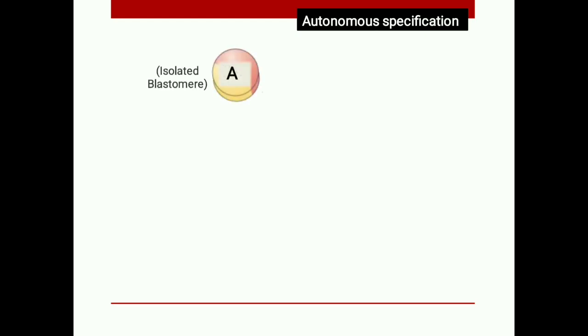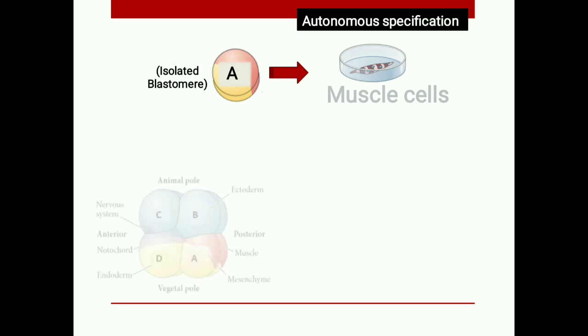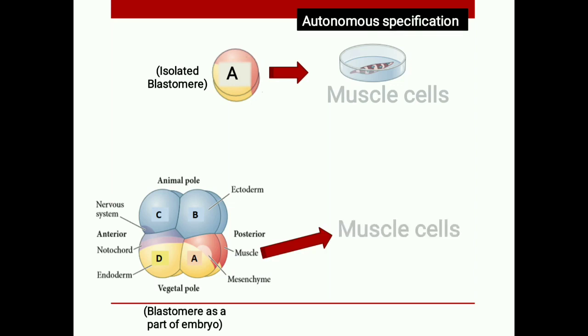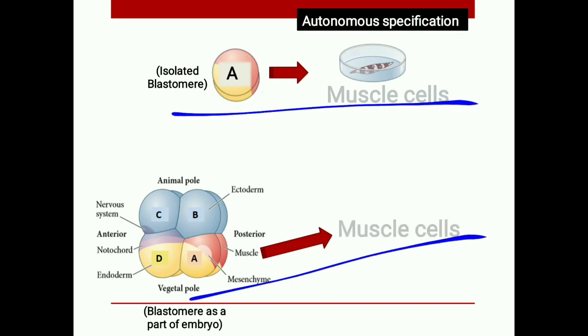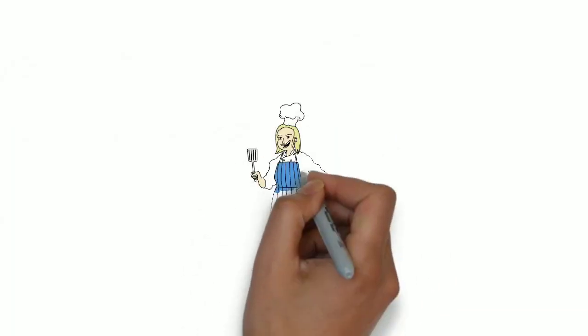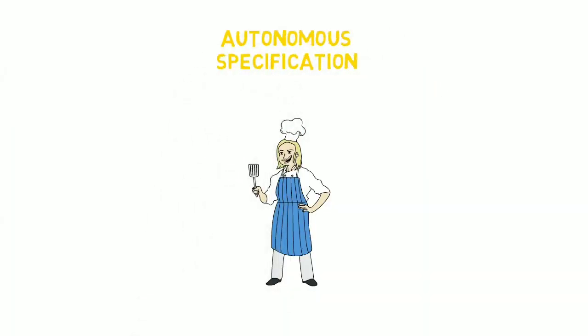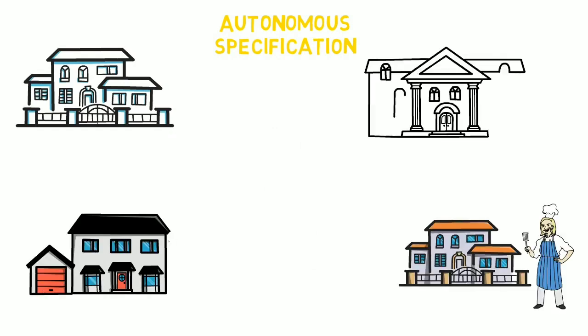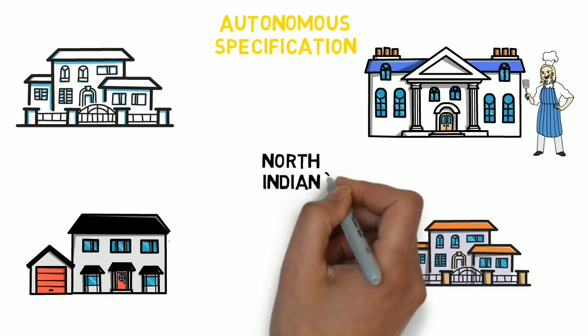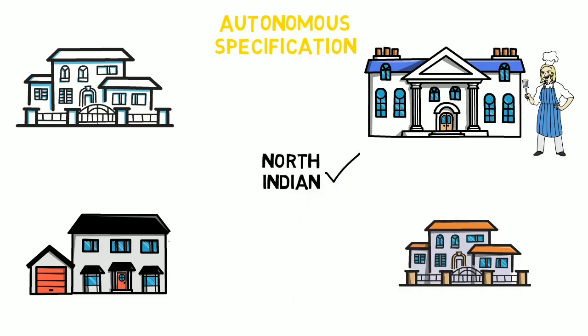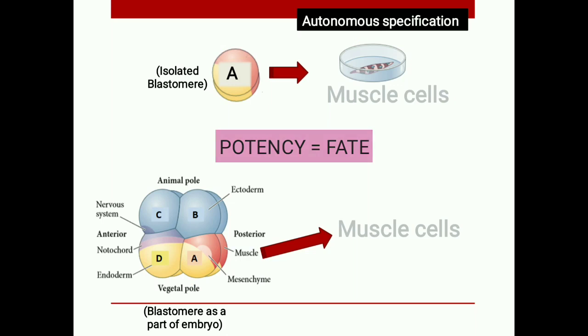In the autonomous case, if the cell is isolated, it still becomes muscle cells. When the cell is part of the embryo, it also becomes muscle cells. So the fate and the potency are the same — both in isolation and within the embryo. Going back to the cook analogy in the autonomous example: regardless of which house the cook goes to, they will only make one type of food. So in the autonomous cell, the fate and the potency are equal.